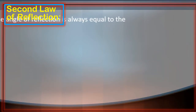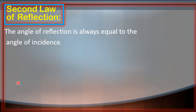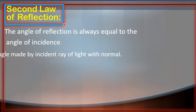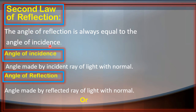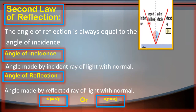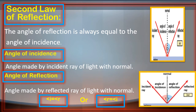Students अब हम discuss करते हैं Second Law of Reflection को. According to Second Law of Reflection, the Angle of Reflection is always equal to the Angle of Incidence. Students पहले हम describe करते हैं कि Angle of Reflection क्या है और Angle of Incidence क्या है. जैसा कि First Law में discuss किया था, Incident Ray plane mirror पे टकराती है, जिसके बाद reflection का process occur करता है. फिर हमने Normal draw किया था — point of incidence से एक perpendicular draw किया था.